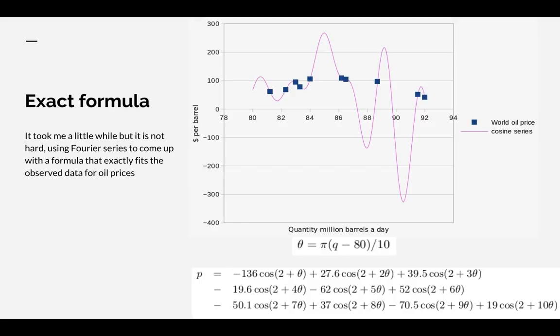Well, Leibniz said you can come up with an exact formula to go through the points on the curve and it took me a little while to do it. But using what's now called Fourier series, it was easy to come up with a formula that exactly fits the observed oil prices. So here is the actual oil prices and this is the law I've derived, which explains the oil prices.